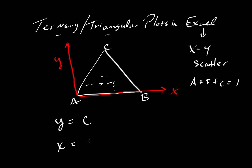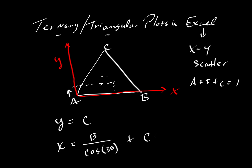To get the horizontal distance: the Y distance is simply equal to C. The X component will be this — take the value of B, divide it by the cosine of 30 degrees, and then add to that C times the tangent of 30 degrees.